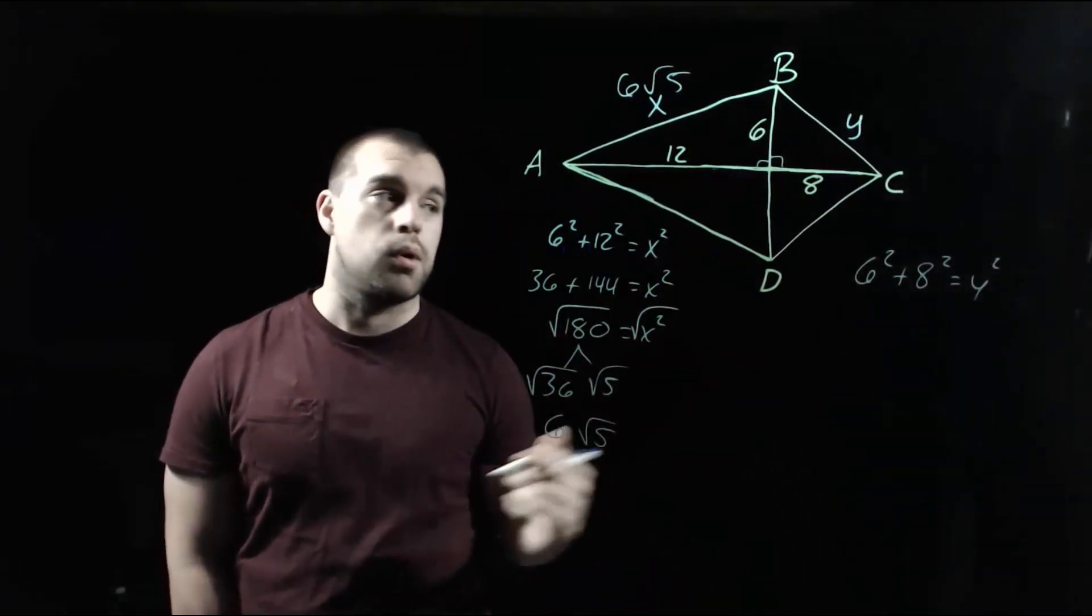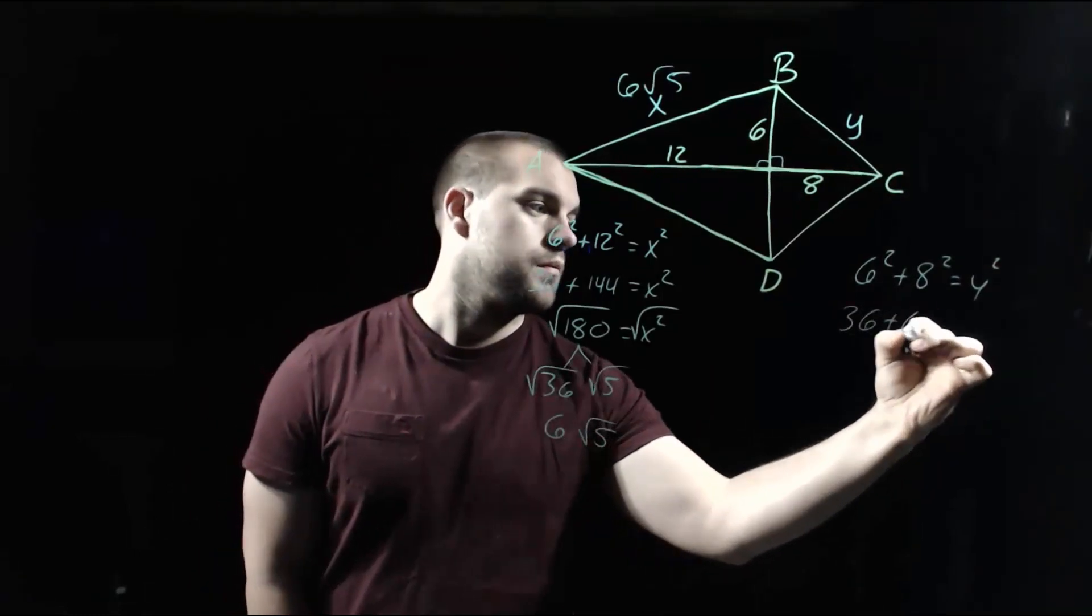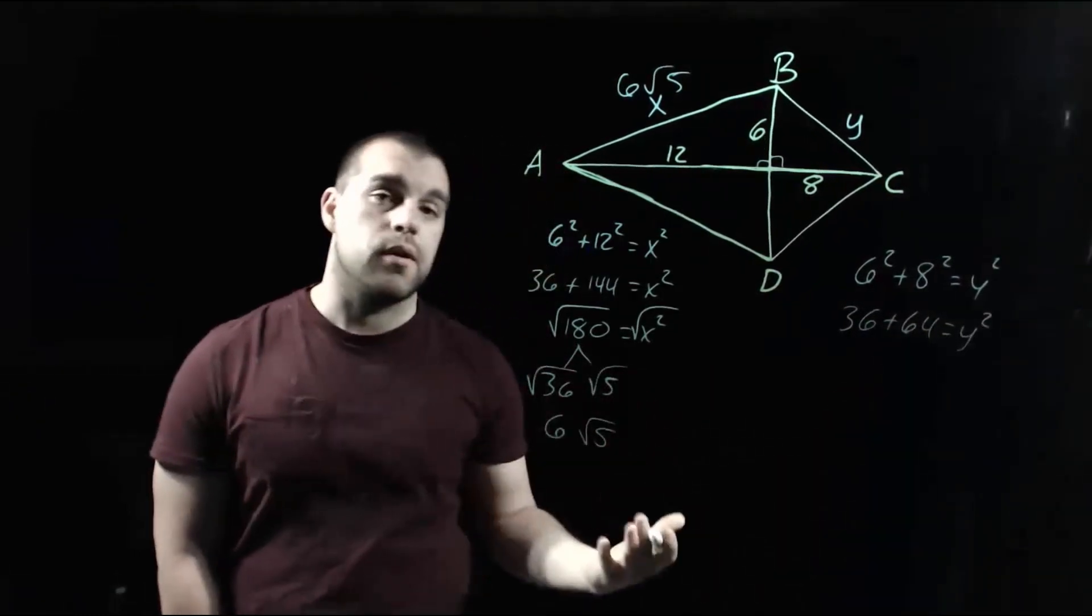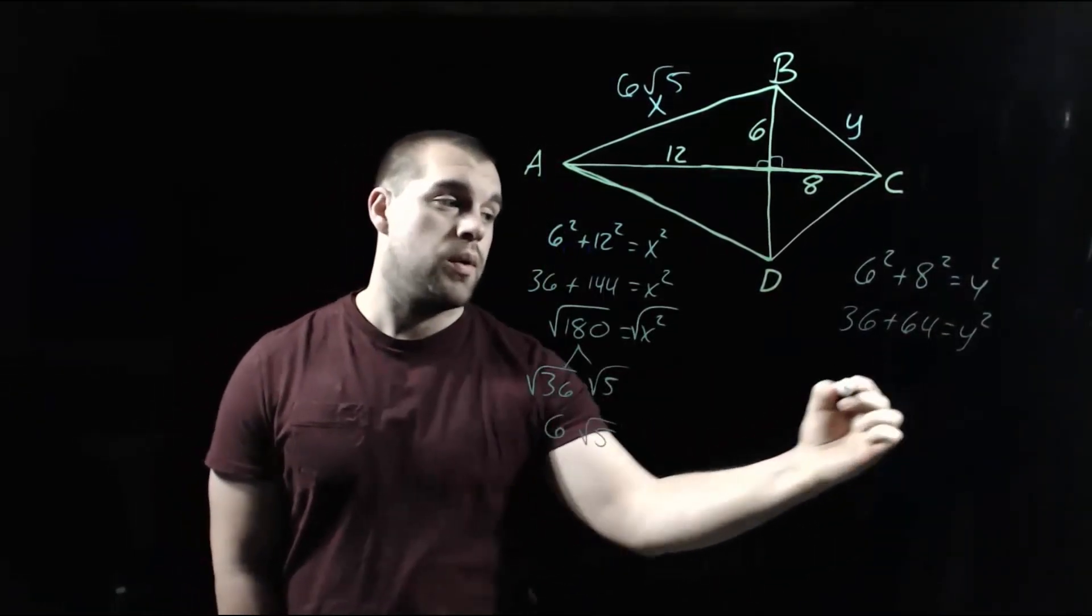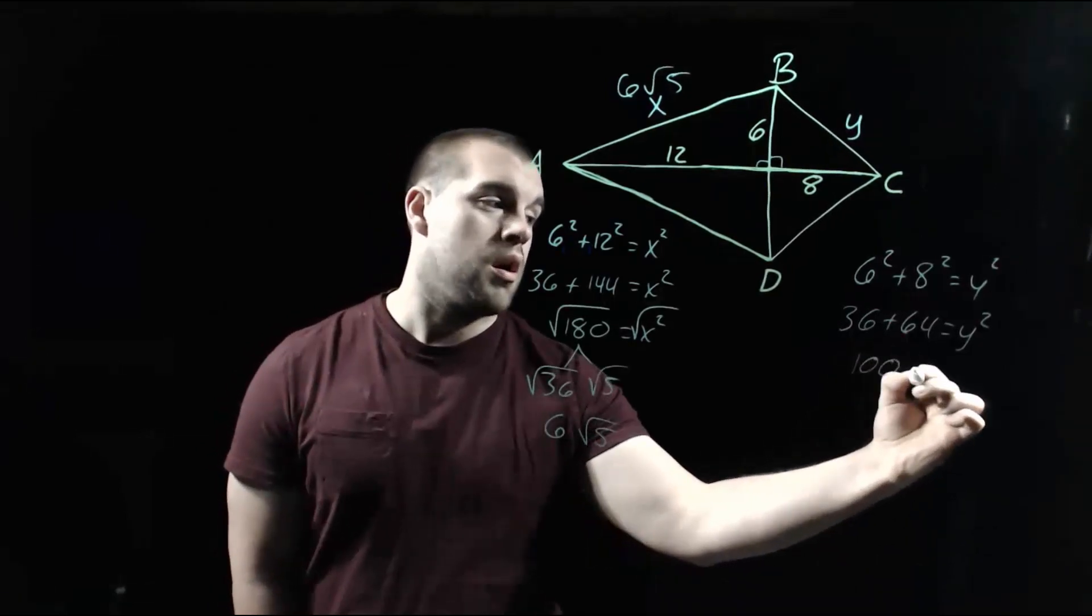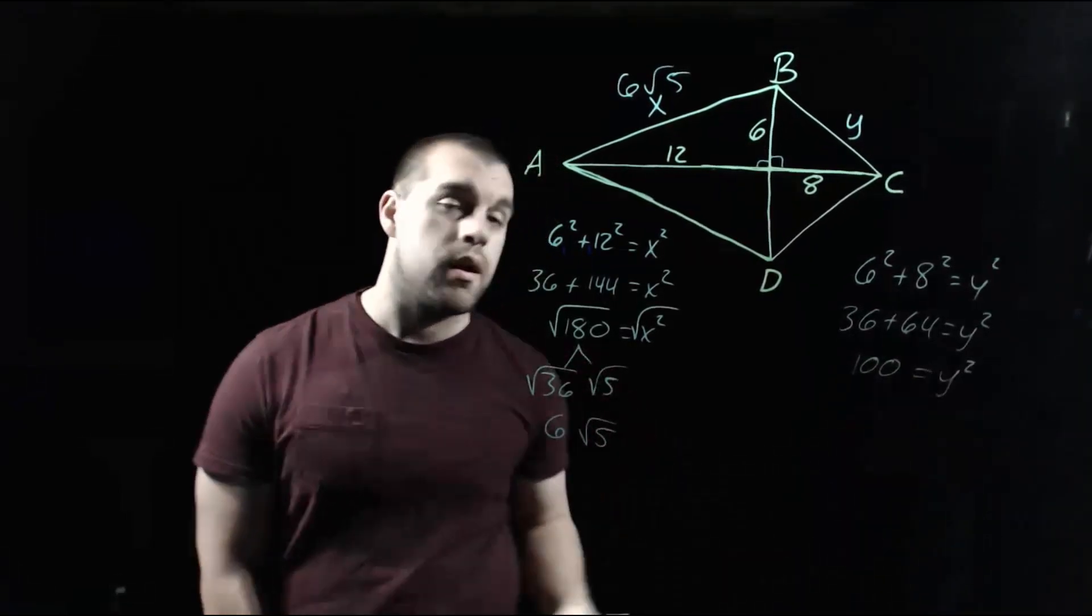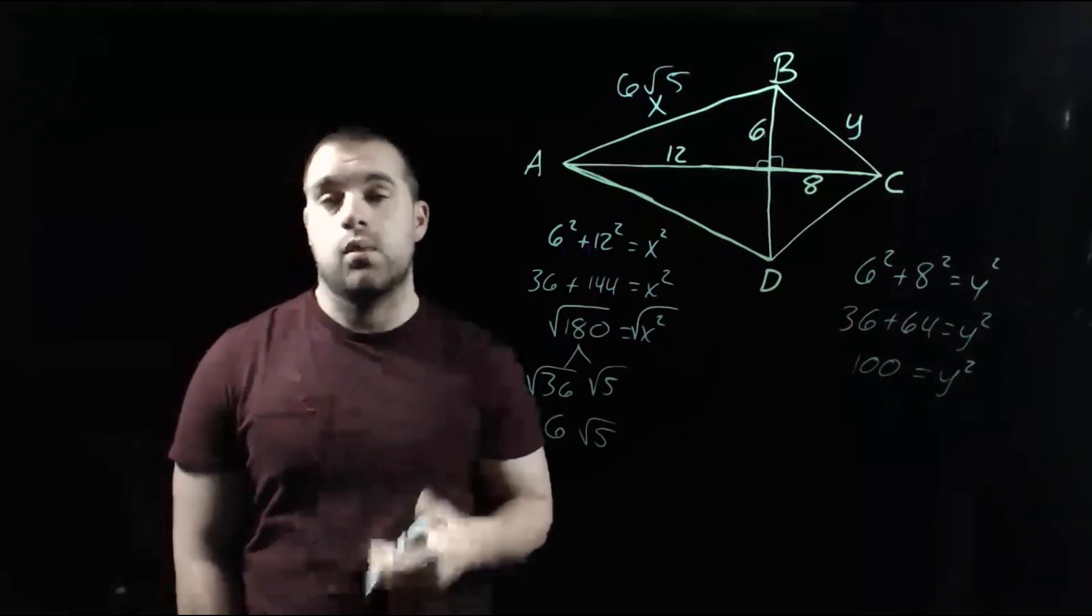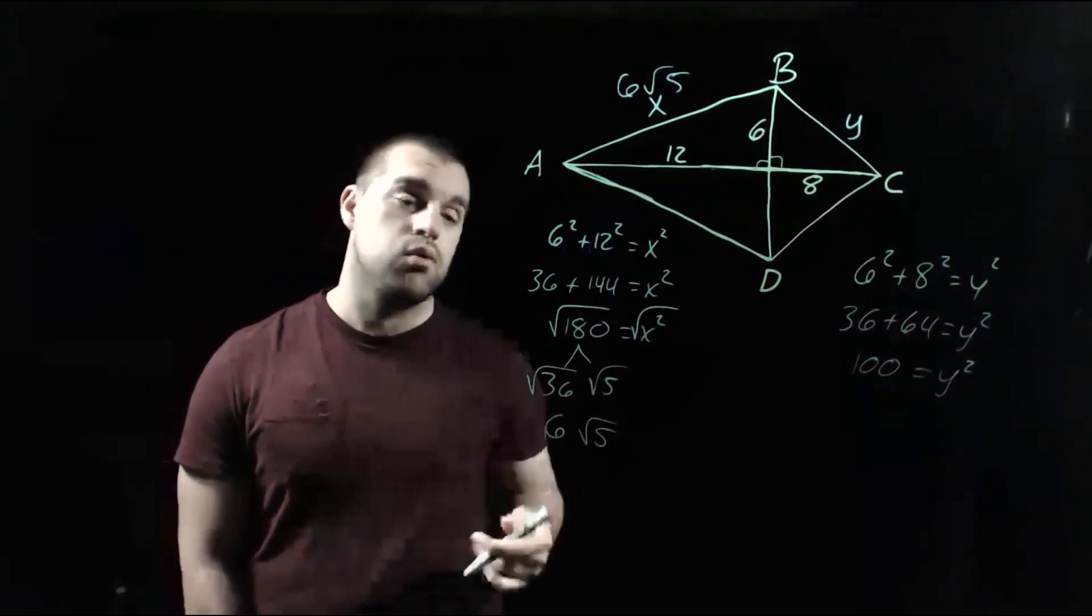On the left-hand side, again, we're going to square both of those things. So we get 36 plus 64 equals y squared. Adding those up, we get 100 as our y squared value. But again, we don't want y squared, we want just y, so we have to square root both sides.